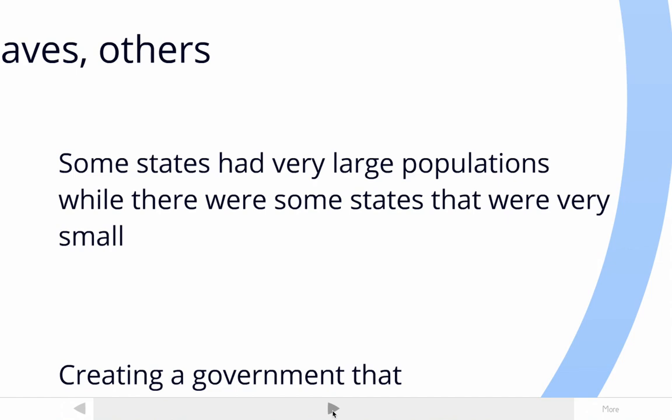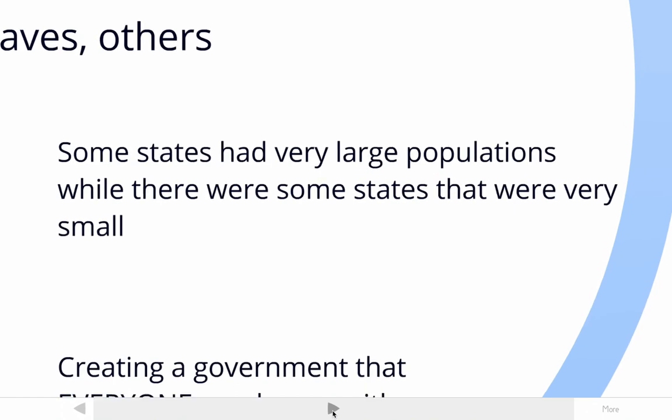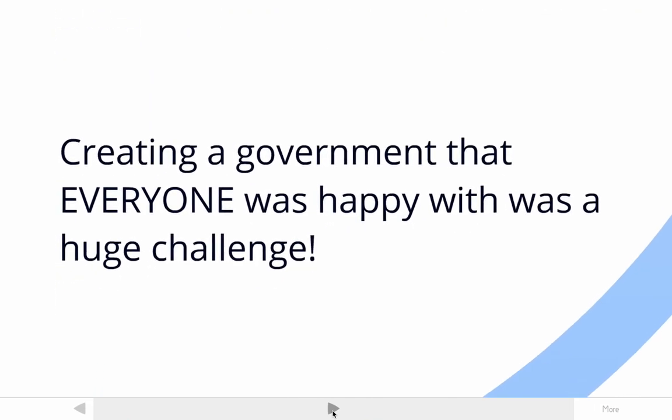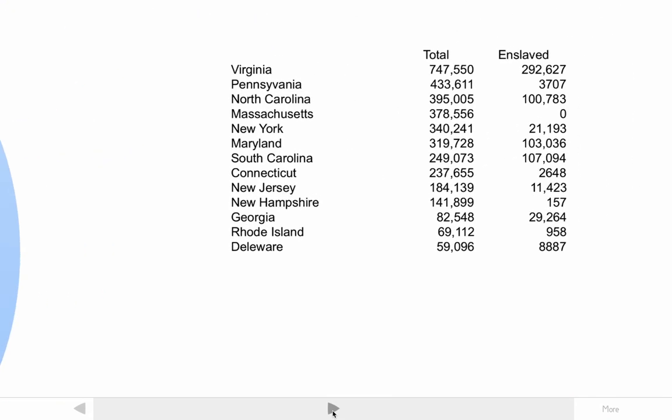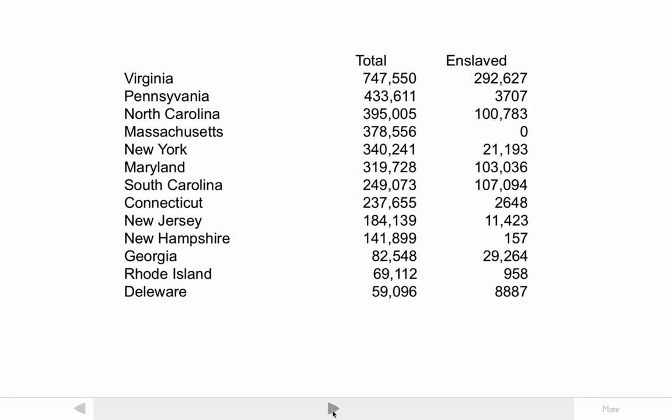Some states had large populations — Virginia was the biggest — while others had small populations, like Delaware and Georgia. So obviously, creating a government that everyone is going to be happy with is going to be a massive challenge. It's going to be so hard to make every state satisfied with the government.